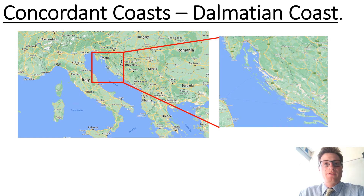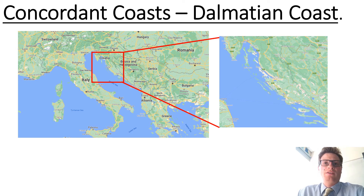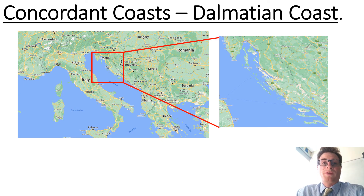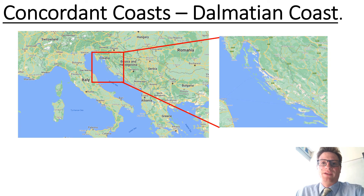We now head south to the Dalmatian coast, and we can see here a section of Croatia. This is a concordant coast as well, but unlike the haff coasts, this is dominated by harder material. There is a series of hills and valleys which, during times of lower sea level during the last ice age, were exposed. But the rising sea has inundated the valleys, leaving the highest areas of land as islands sticking up above the surface. These islands run parallel to the main coastline.